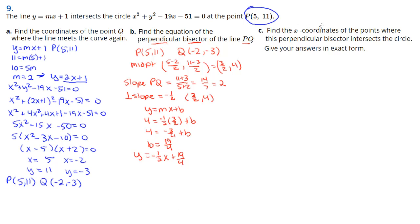Part c: they want to take that perpendicular bisector we just found and find out where it connects with the circle. Once again, I'm going to take what y equals and substitute it back into y squared. This is awful because I've got these fractions. There's no real easy way to do this. I would suggest keeping it as fractions. When I substitute it back in, I'm going to have (-1/2 x plus 19/4) all squared, then minus 19x and minus 51.